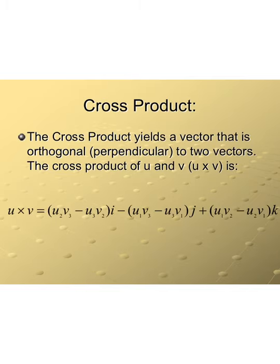To begin with, the cross product yields a vector that is orthogonal or perpendicular to two different vectors. The notation for the cross product of u and v is u×v. This is not multiplication — this is the notation for the cross product, and it applies to two vectors.